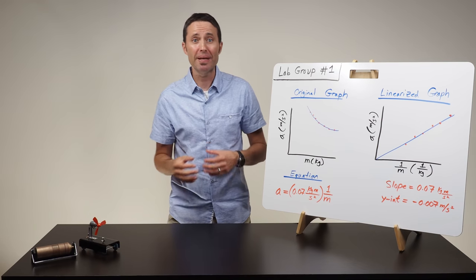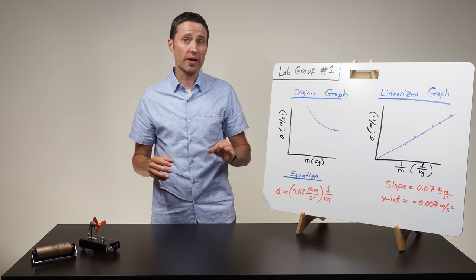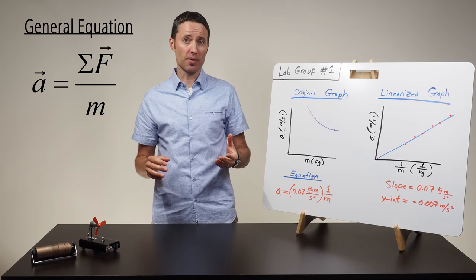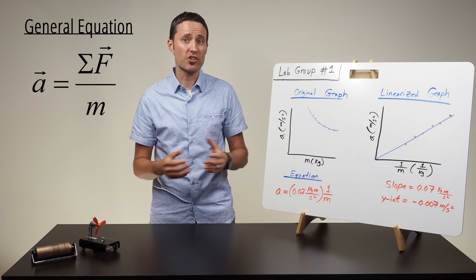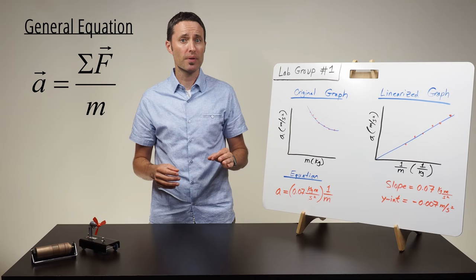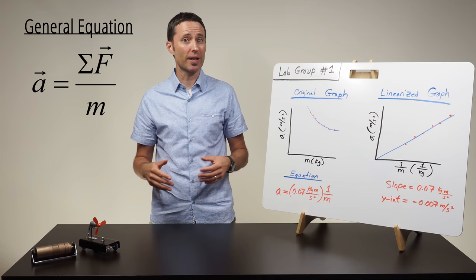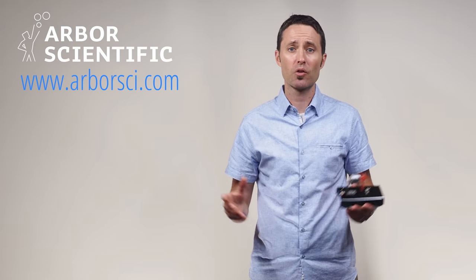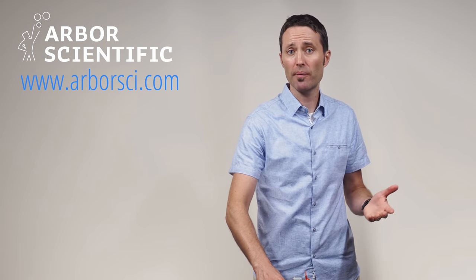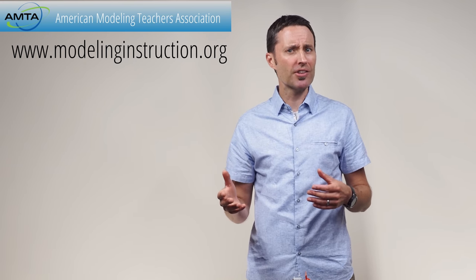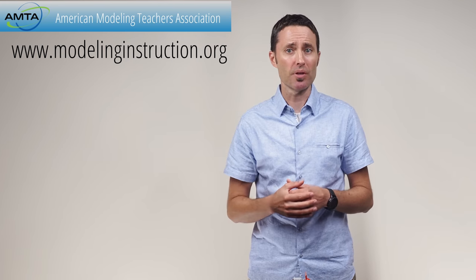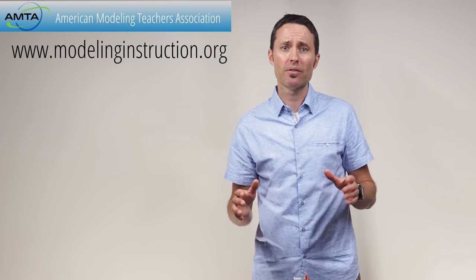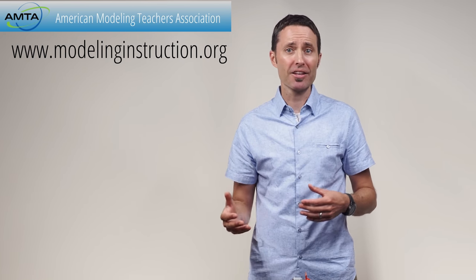After the students reach a consensus about the meaning of the slope and the significance of the y-intercept, you can finally write the general equation on the board. Tell students that this general equation is known as Newton's second law of motion, which shows the relationship between an object's acceleration, mass, and the sum of the forces. You can find all the lab equipment needed to do this investigation at www.arborsci.com. And if you're interested in learning more about these types of guided inquiry labs used in the modeling method of instruction, visit www.modelinginstruction.org.